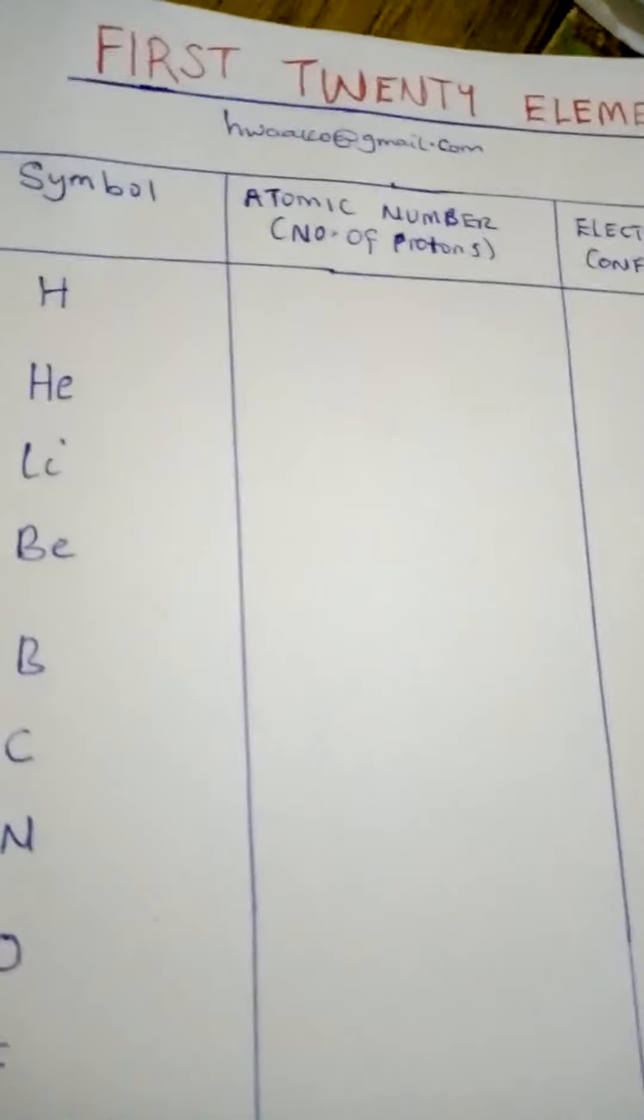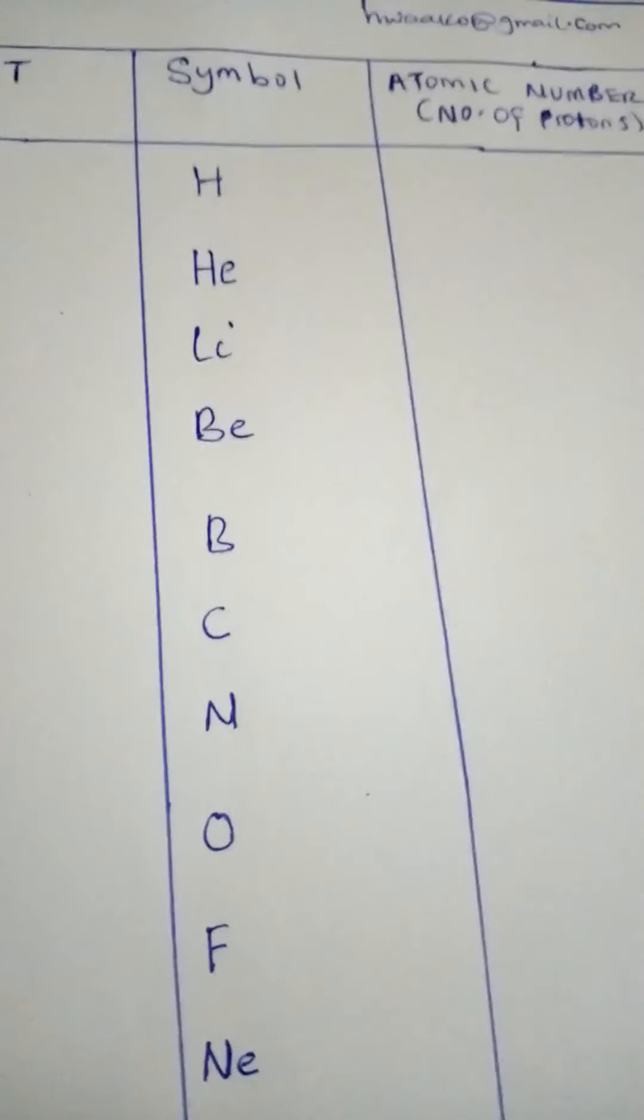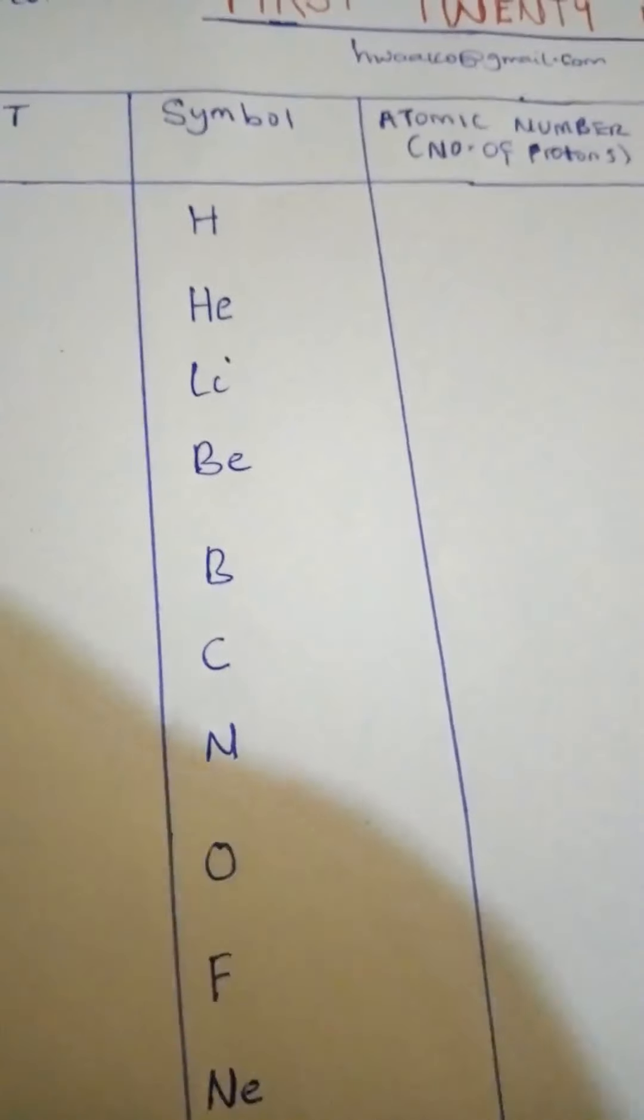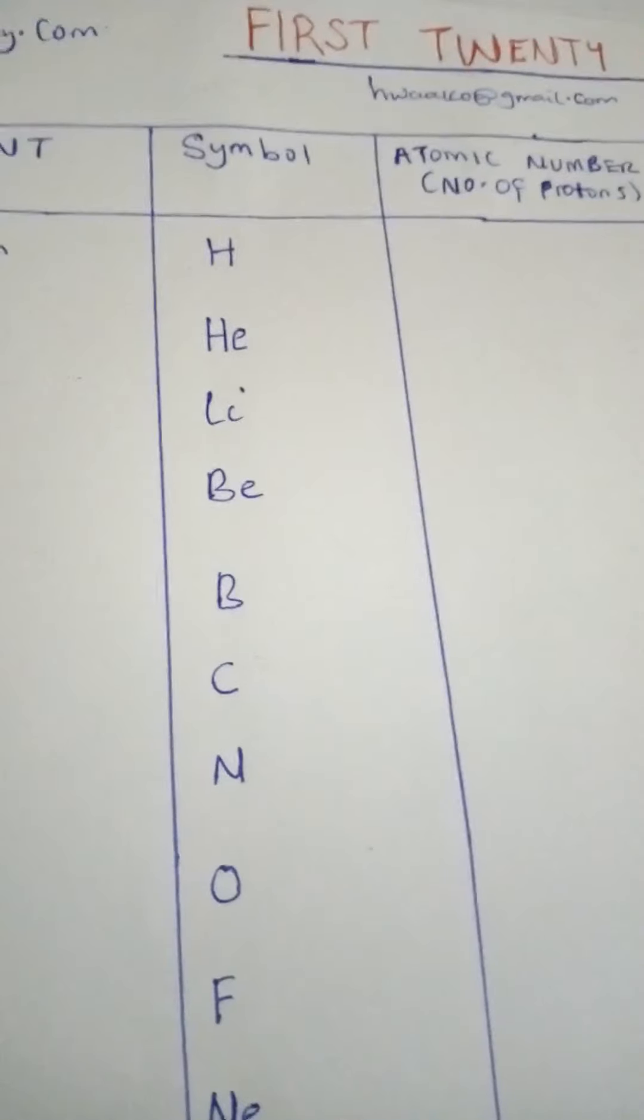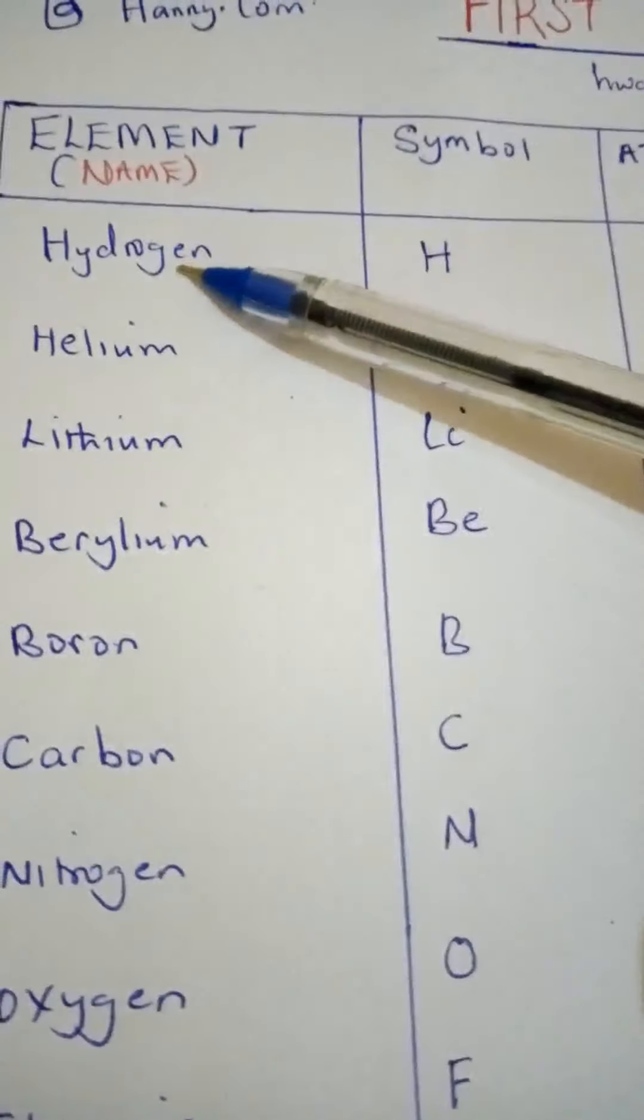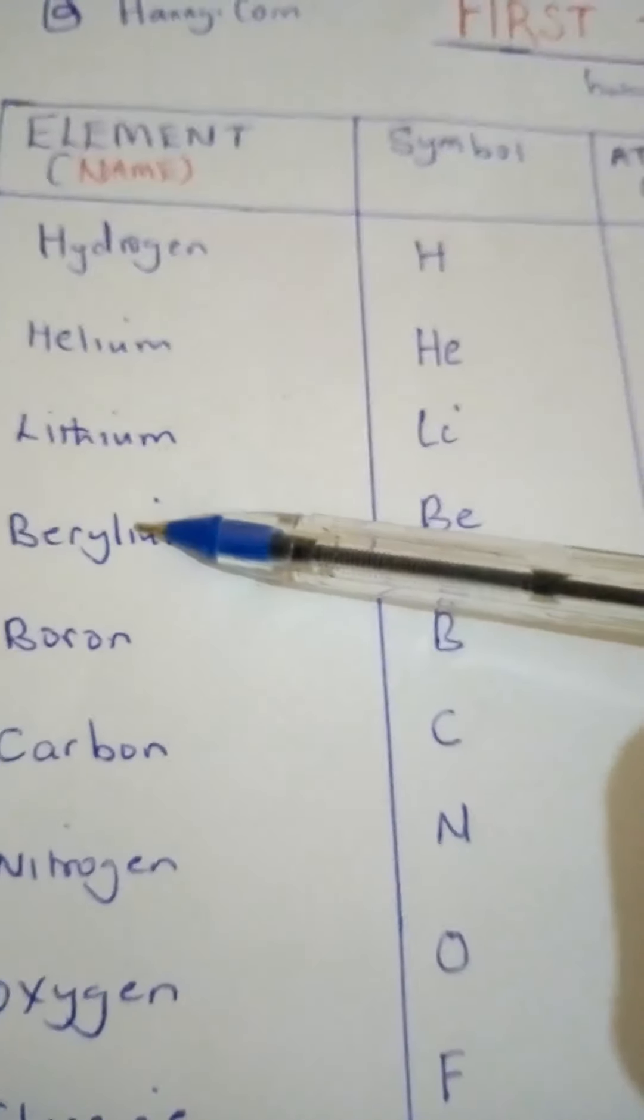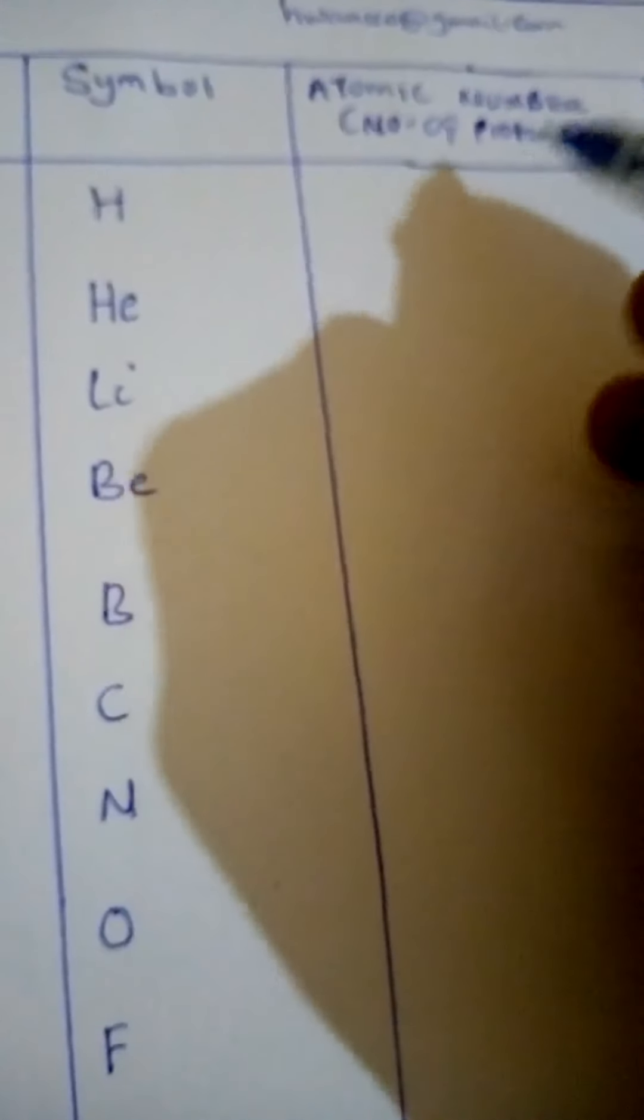So members, now we go to atomic number. Members, atomic number simply is just how they are arranged in their order. Atomic number, the number of protons in the nucleus of an atom. In the next episode, I'm going to show you how they are arranged inside. But for our case, we see hydrogen is the first, helium is the second, lithium is the third, beryllium is the fourth. So in that matter, we just even write here, the number of protons, they are the same arrangement.